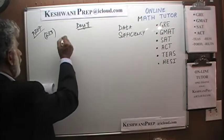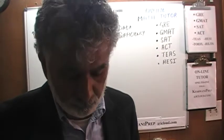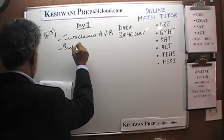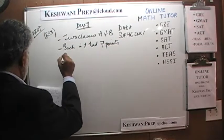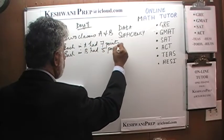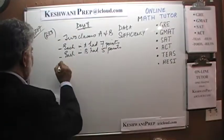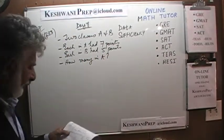The first problem on page 207 — problem 283 — says that we have two classes, A and B. Make sure the book is always in front of you. Read the problem yourself because I paraphrase and make little changes in the wording. But read it yourself and you will understand we are doing the exact same thing. Each person in A had 7 points, and each person in B had 5 points.